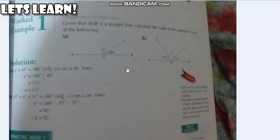Now let me continue with explaining the question to you. Given that A, O, B, whenever you have a question from this way, you will always move your hands. So A, O, B is a straight line. You have a straight line. Calculate the value of the unknown in each of the following. You will find unknown value.